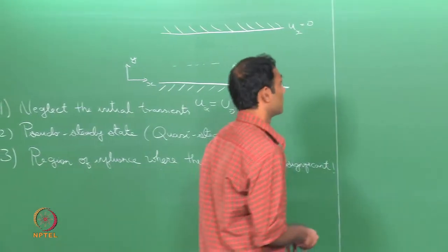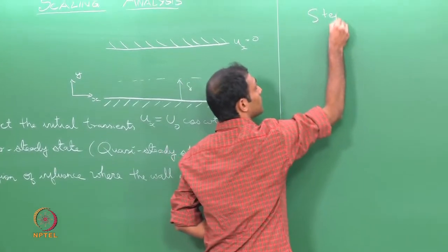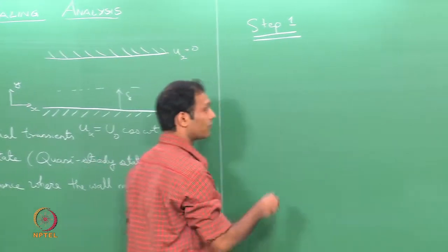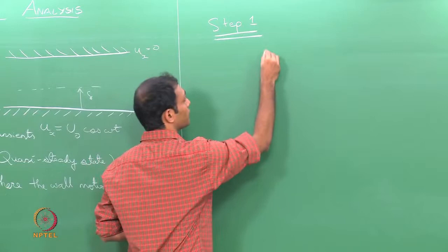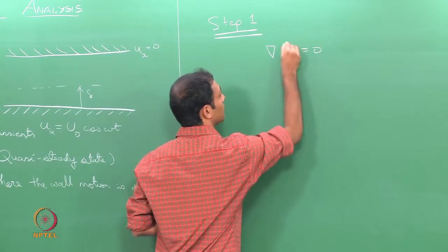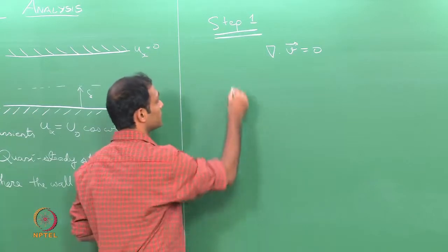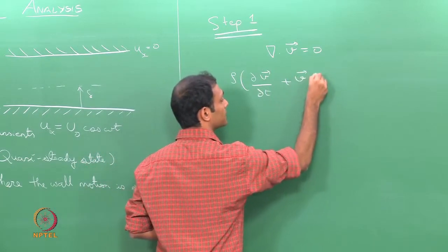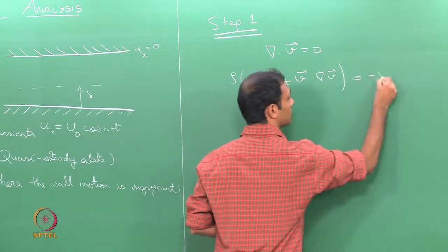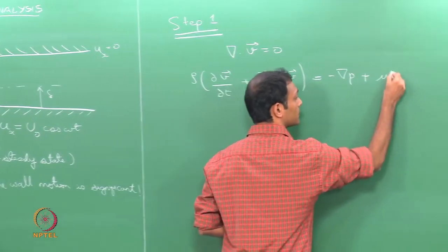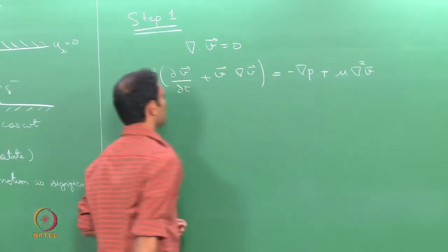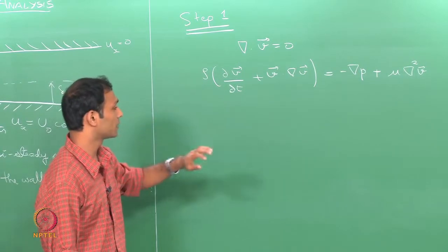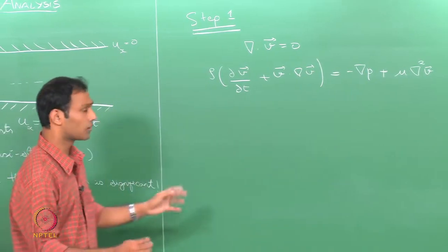We go to step 1 as discussed in the last class, which is writing down the governing equations in dimensional form. As in any fluid flow problem, the continuity equation and the Navier-Stokes equation are the governing equations. The continuity equation is mass conservation and the Navier-Stokes equation is Newton's second law applied to the fluid.